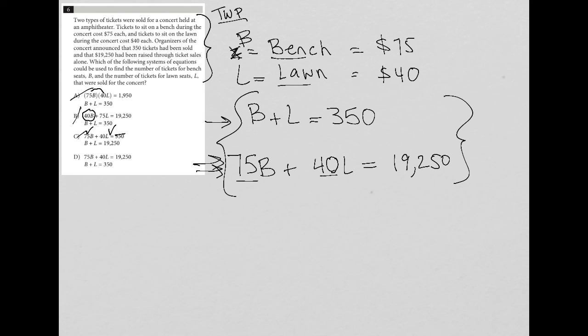So D has to be the right answer, but let's just check and make sure. 75B plus 40L equals 19,250. Perfect. And we know that the total number of bench tickets plus the number of lawn tickets equals 350. So choice D is the right answer here.